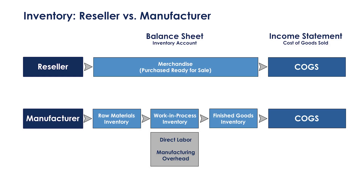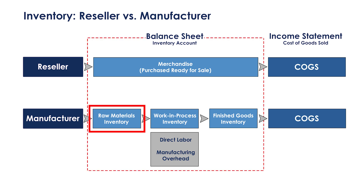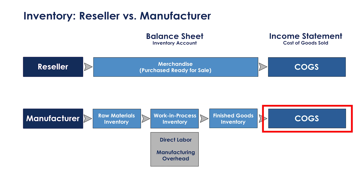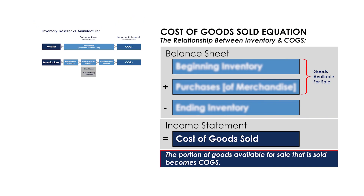As the manufacturer develops the product itself, it must allocate all of the associated costs to that product on the balance sheet — from the raw materials procured through the work-in-process stage until it is complete and ready for sale. Then, when it is sold, the value is transferred from the balance sheet to the income statement under cost of goods sold. The COGS equation provides a helpful visual. Simplified, this equation states that COGS is equal to beginning inventory plus purchases minus ending inventory.